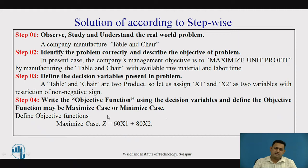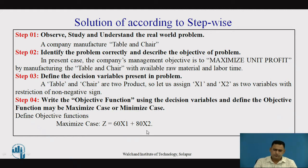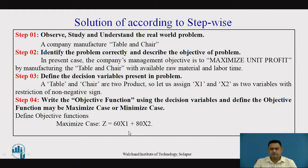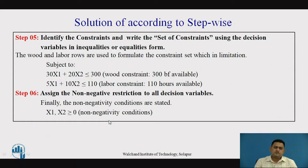We are interested to find out the value of Z — the profit we get based upon the quantity of tables and chairs. We also want to know the values of the variables x1 and x2. As stated, x1 and x2 are non-negative, meaning the manufacturing quantity of tables will be either zero or more than zero, not negative. So the table and chair variables have the restriction of non-negativity.